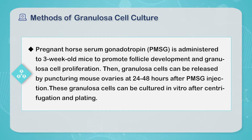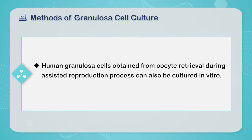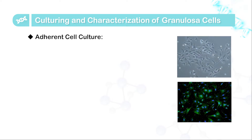These granule cells can be captured in vitro after centrifugation and plating. In addition, human granule cells obtained from oocyte retrieval during assisted reproduction processes can also be captured in vitro. The specific culture conditions and characterization methods are as follows.